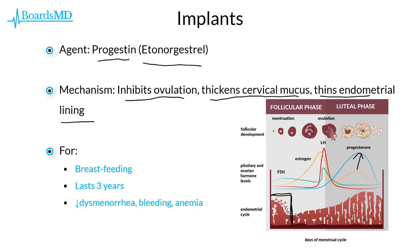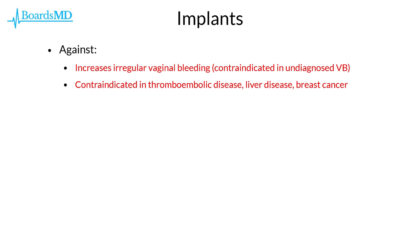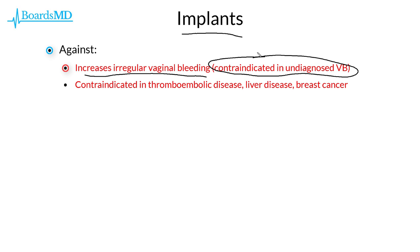The benefits of the progestin implant are similar to other progesterone-based contraceptive forms. They are excellent for breastfeeding mothers as they do not contain estrogen. These implants have an added benefit in that they last for three years, an advantage over the depo shot which must be given every three months. They also decrease dysmenorrhea, bleeding, and anemia. However, progestin-based implants can increase irregular vaginal bleeding, and are relatively contraindicated in patients with undiagnosed vaginal bleeding or a history of thromboembolic disease, liver disease, or breast cancer.